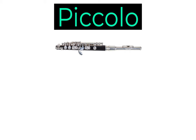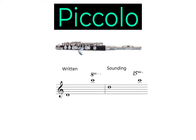The piccolo has a sounding range starting at 2 Ds above middle C and goes all the way up to the 5th C above middle C. The piccolo is a transposing instrument — the note that's heard is actually an octave higher than the note written on the page. This isn't hugely important if you're just composing using samples, but it's something to be aware of if you get the chance to compose for real instruments and players.